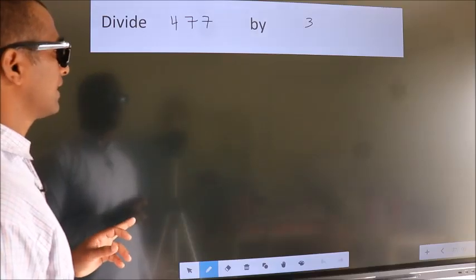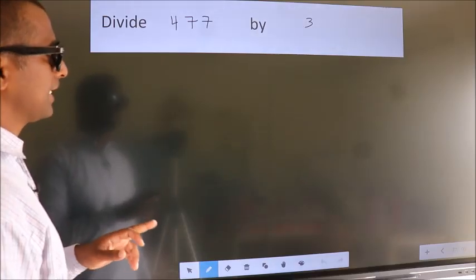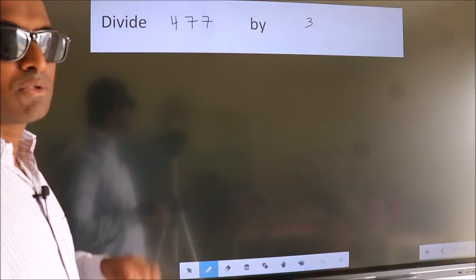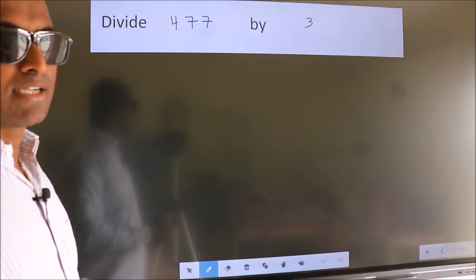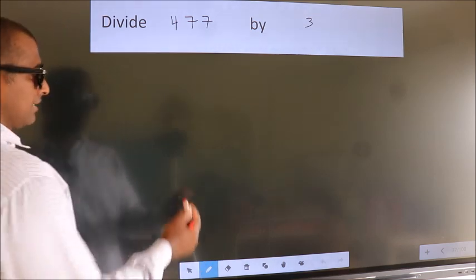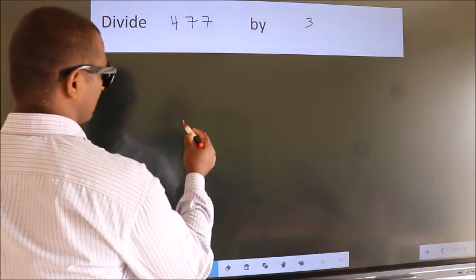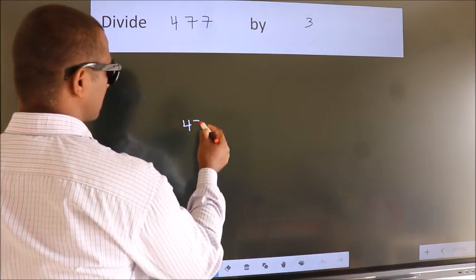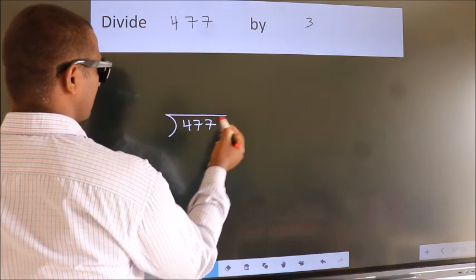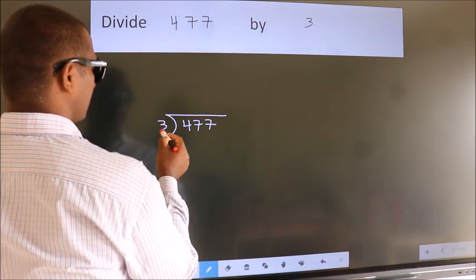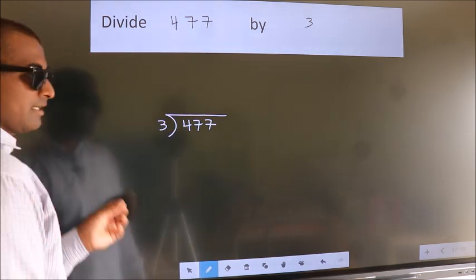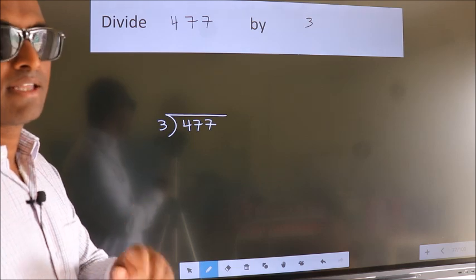Divide 477 by 3. To do this division, we should frame it in this way: 477 here, 3 here. This is your step 1.